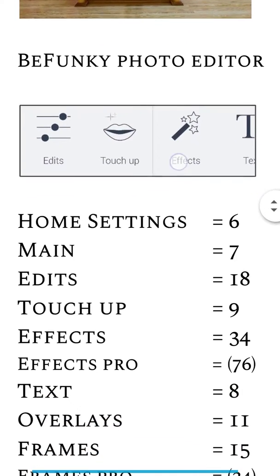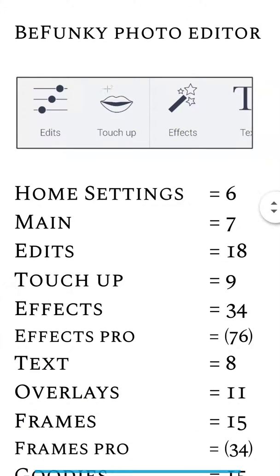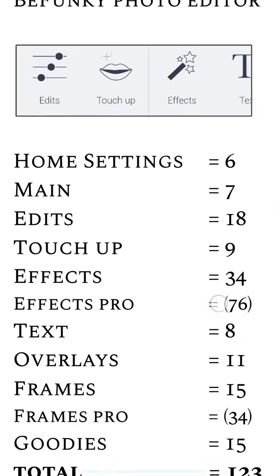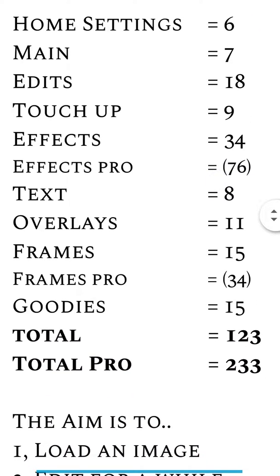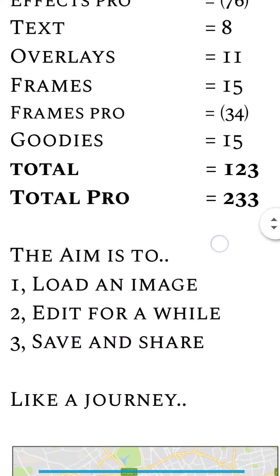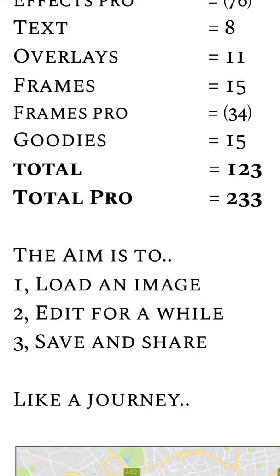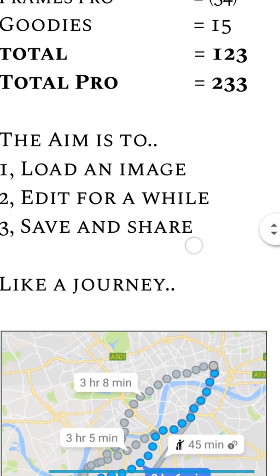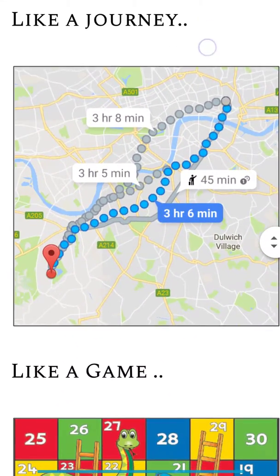If you go in and say to yourself 'I've just fiddled about with my mobile phone and hit save' — if it's printed in real life big, it could be worthy of going on the wall in a big frame. The BeFunky photo editor has some little buttons along the bottom. There are 34 effects, 76 in the pro version. So although the simple aim is to load an image, edit it, save it and share it, you're talking about 100 or 233 things that could be happening.